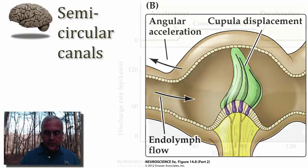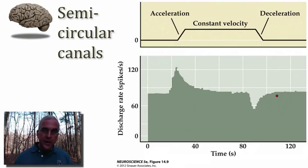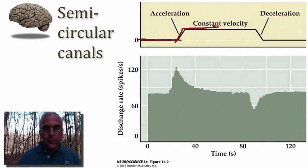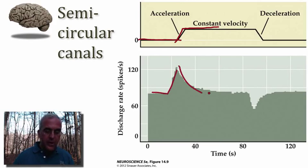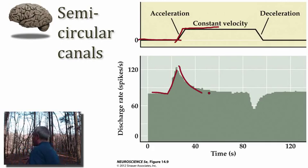From a physiological perspective, we can record the discharge rate of an axon receiving synaptic input from a hair cell in the crista of a semicircular canal. As we accelerate — that is, as we begin to turn our head — there is a transient response: a temporary increase over the course of a couple of seconds in the firing rate of this eighth cranial nerve afferent.